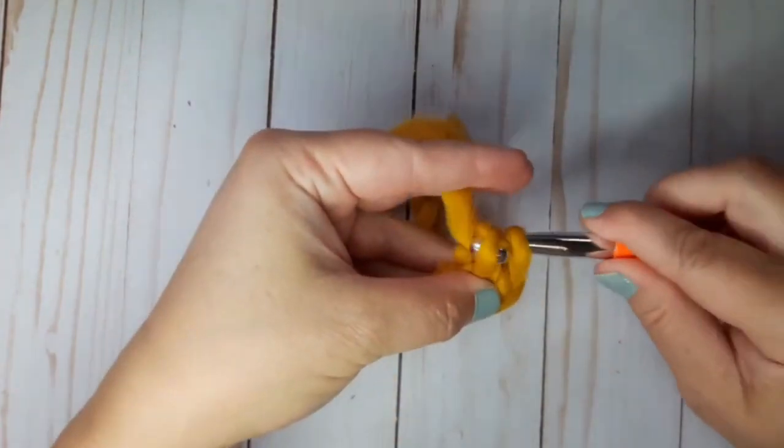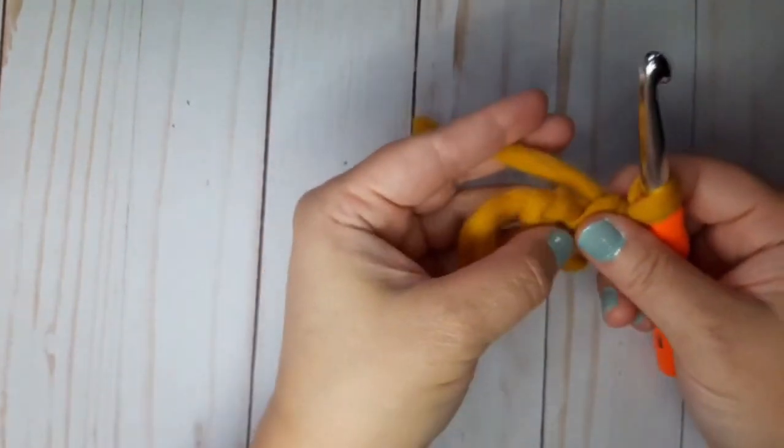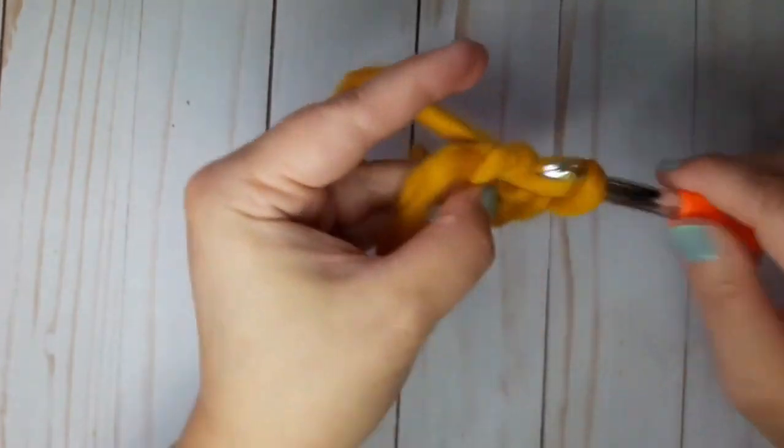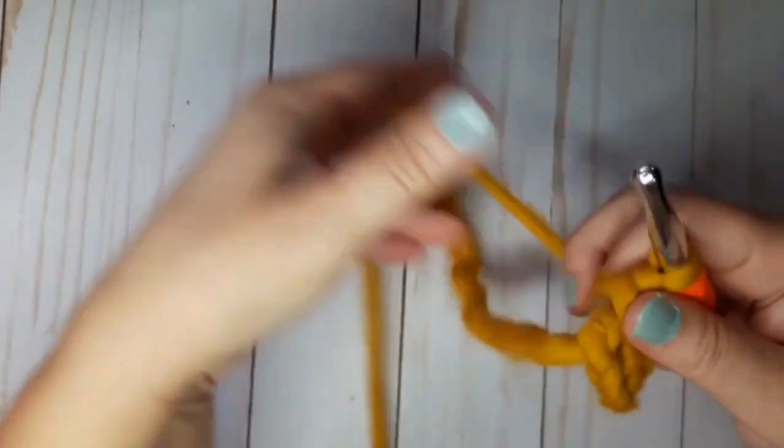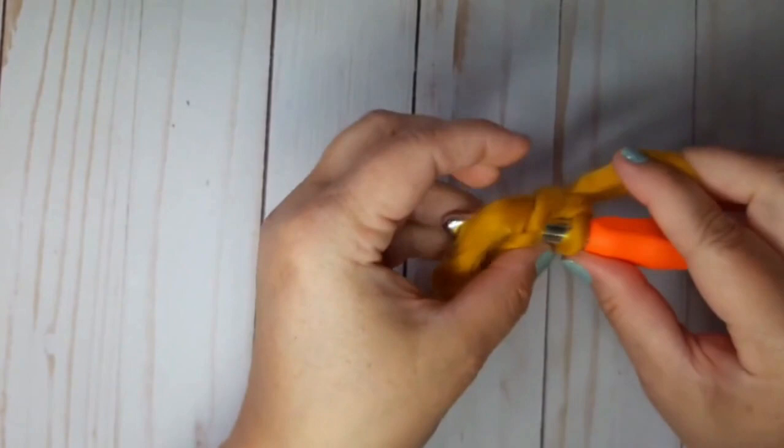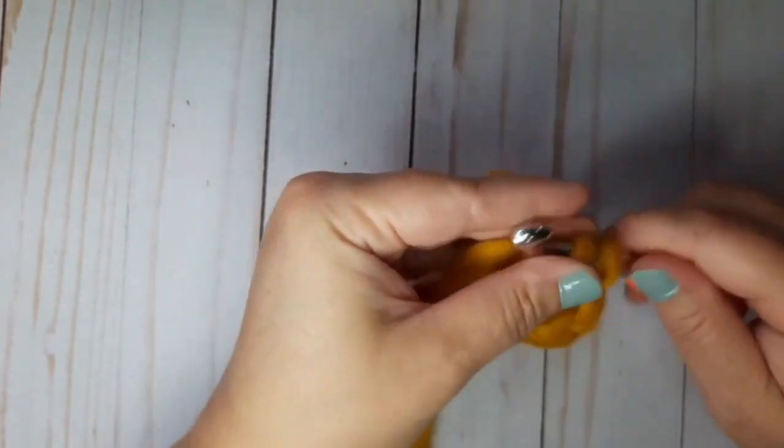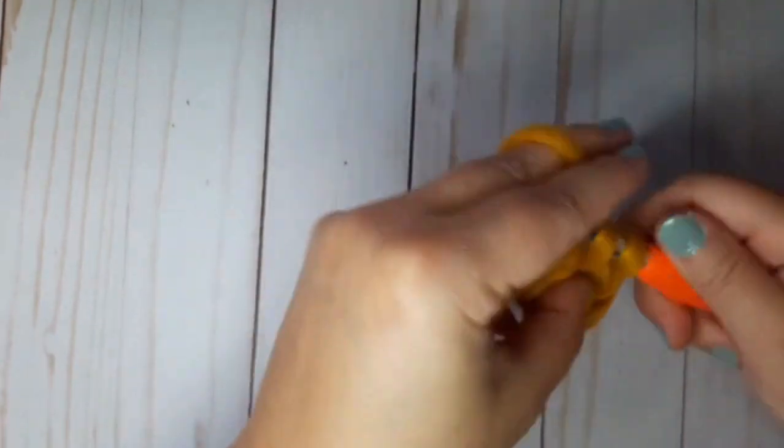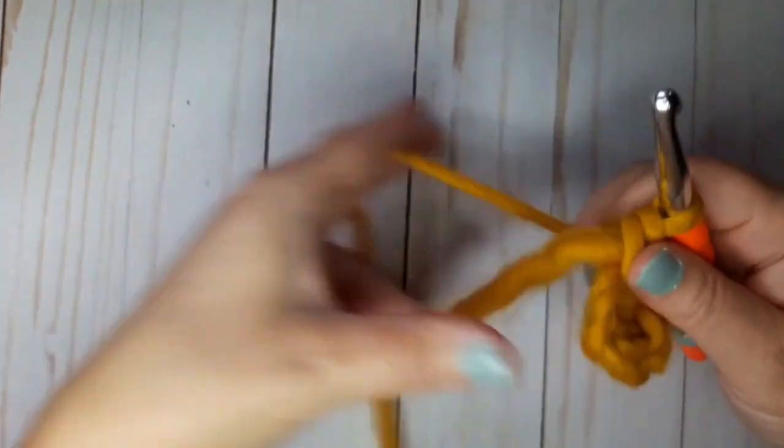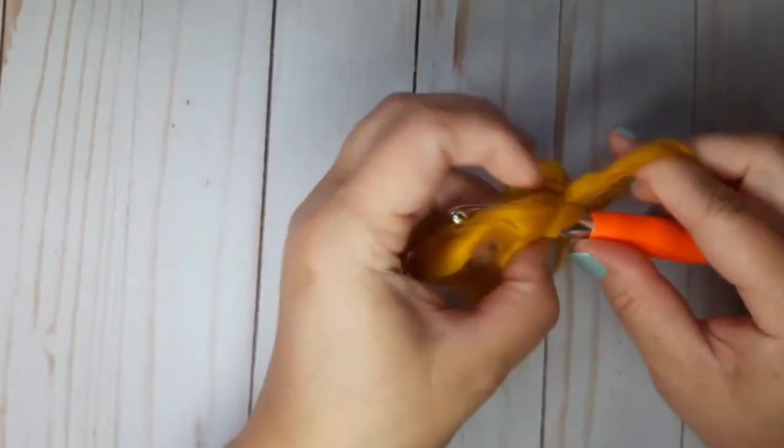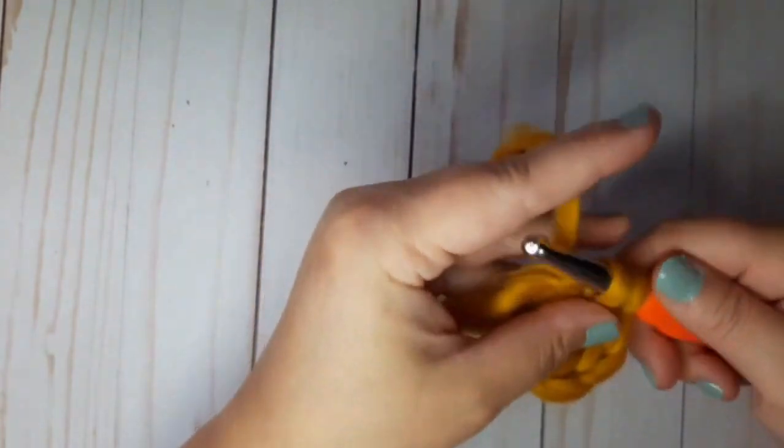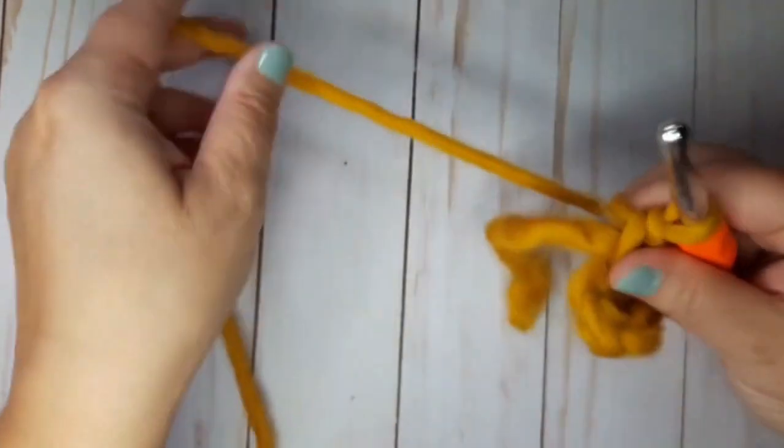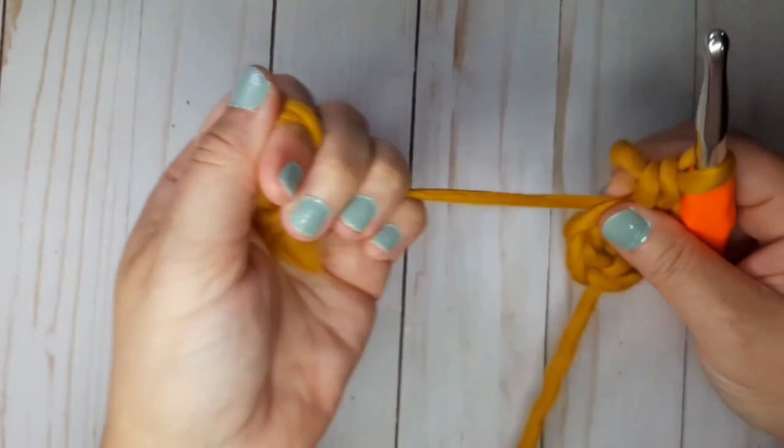I'm just gonna do single crochets. I'll do five: one, two, three, four, five. You just want to make sure that you're going around the tail again so you can pull it tight.